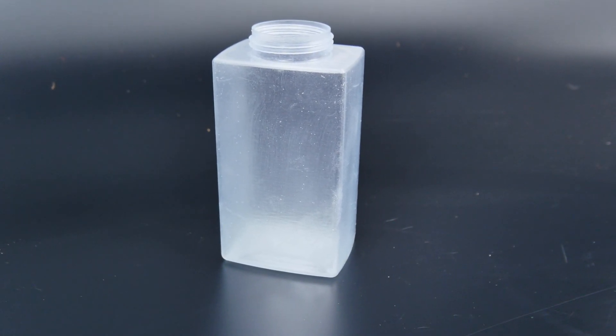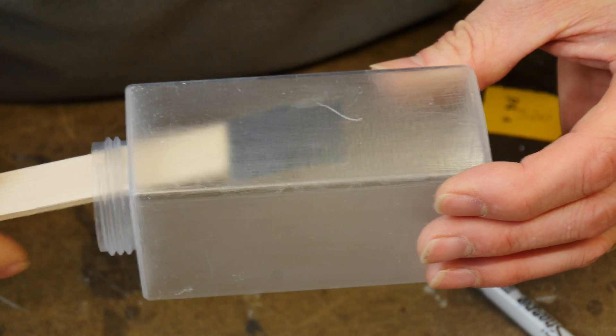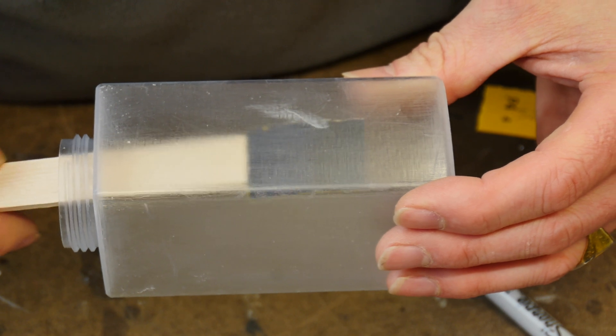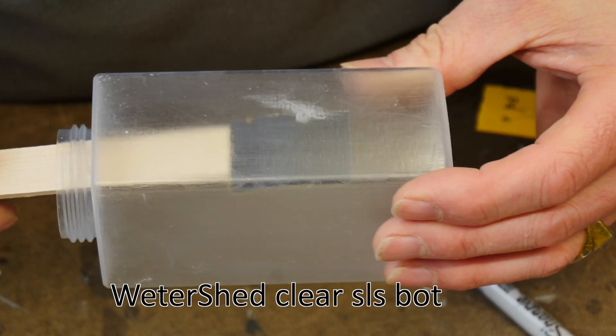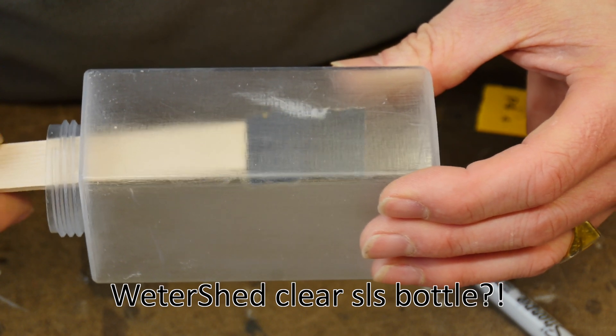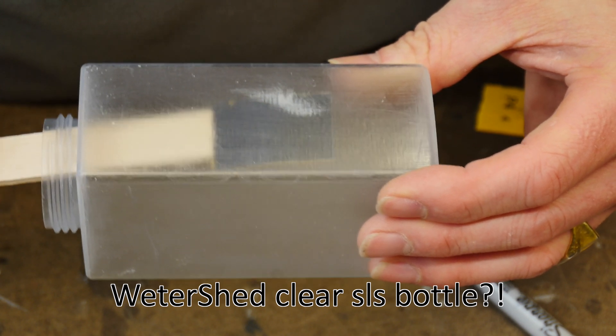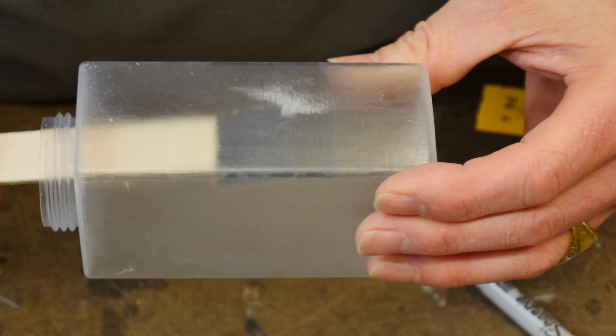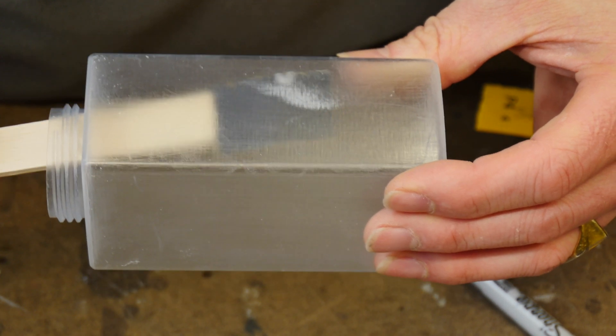In this video, we're going to cover the same process with two different substrates of materials. This first material in this square bottle where I'm sanding the mark out of it, and this is how it came, is using a substrate called Watershed using an SLS process to make the bottle. The second bottle that we're going to do this process to uses an SLA process using a material called Water Clear, and it gives us different results.